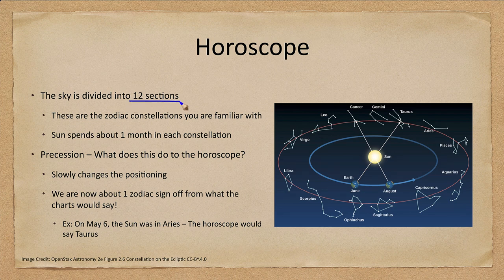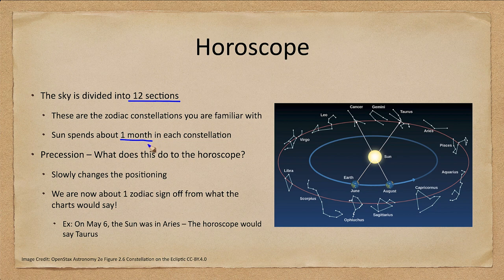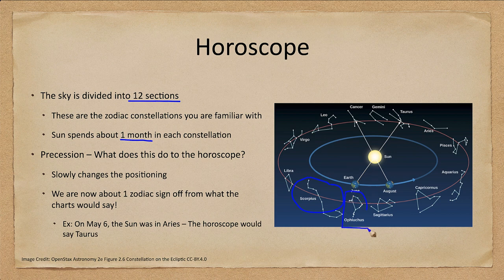When we look at a horoscope, the sky is divided into 12 sections — those constellations of the zodiac that you are familiar with. The Sun spends approximately one month in each constellation, though this is not always exactly the case. The zodiac for astrological purposes splits things up more evenly than reality warrants. In fact, the Sun passes very quickly through some constellations like Scorpius, and actually passes through the constellation Ophiuchus, which is not one of the traditional zodiacal constellations.